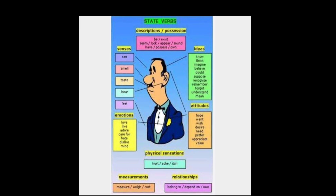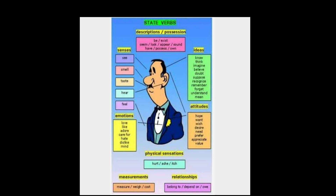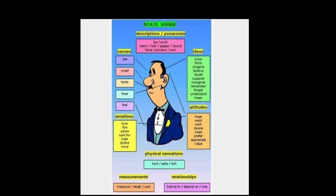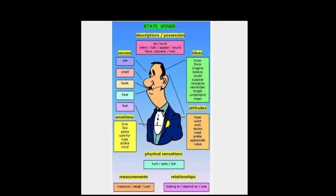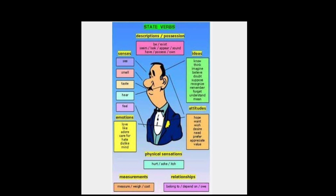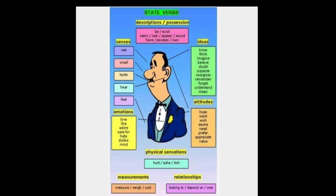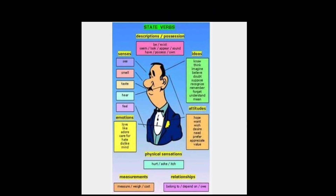Some Stative Verbs show attitude like: hope, want, wish. Some Stative Verbs show physical sensations like: hurt and ache. Some Stative Verbs show measurement like: measure and cost. Some Stative Verbs show relationships like: belongs to, depends on, and own.